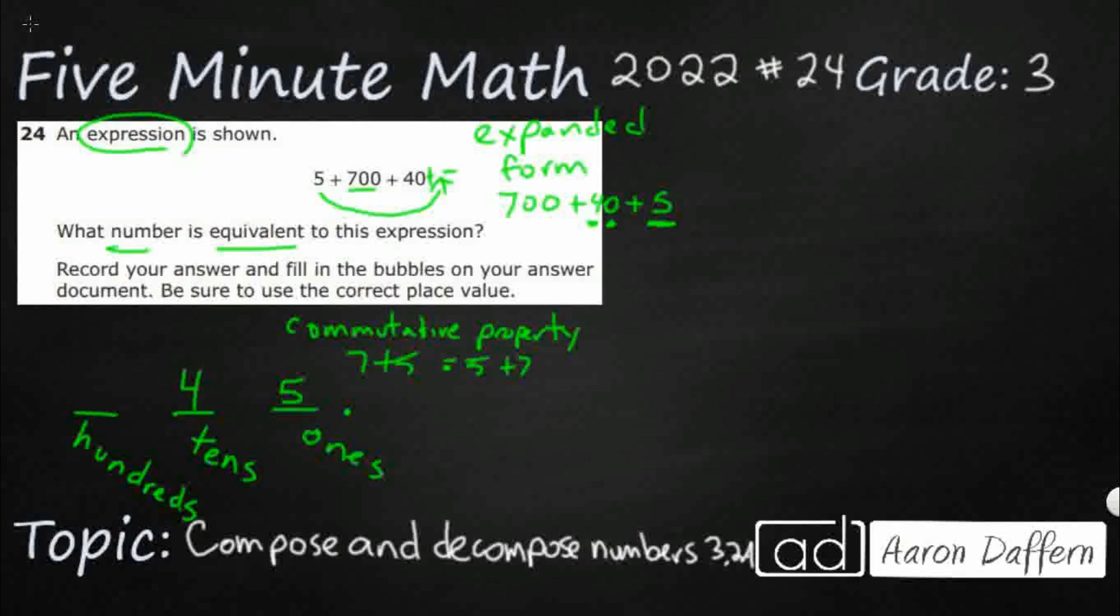Then I've got 700. There's my ones place, there's a zero. Tens place, there's a zero. Hundreds place, there's my seven. So 745 is what it looks like.